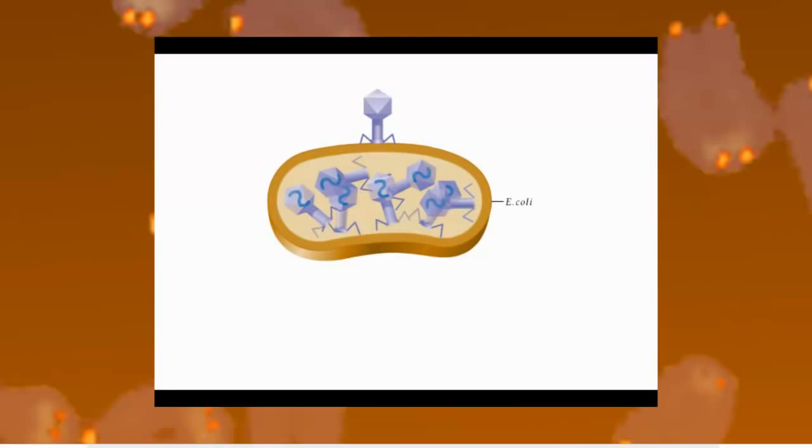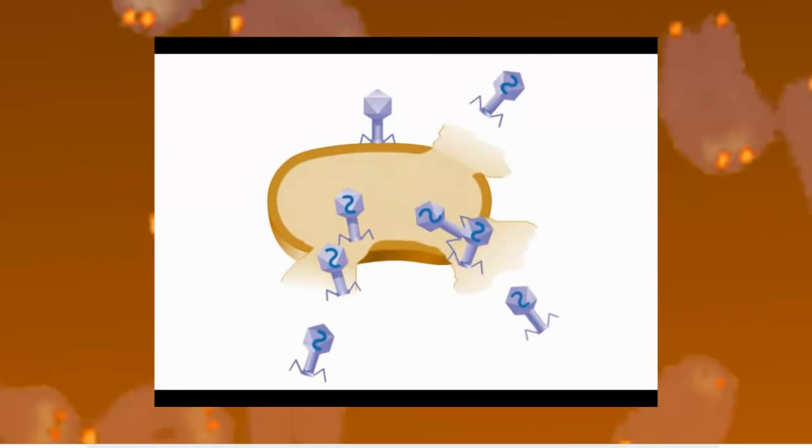When the life cycle is complete, 100 to 200 progeny phages have been assembled inside each bacterium. The bacterium breaks open, or lyses, and the phages are released.